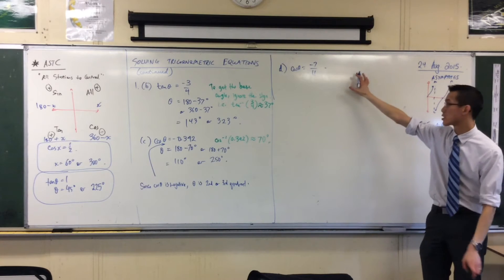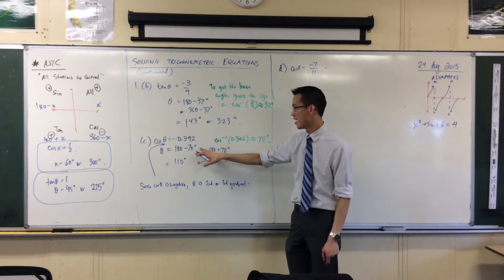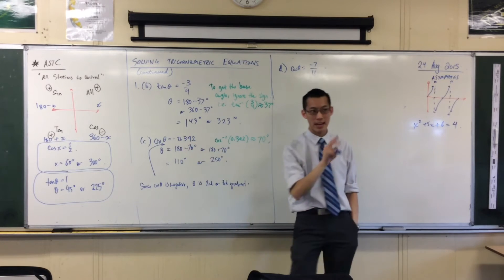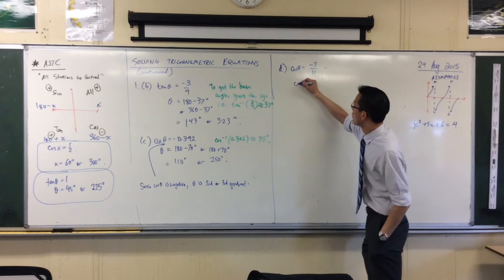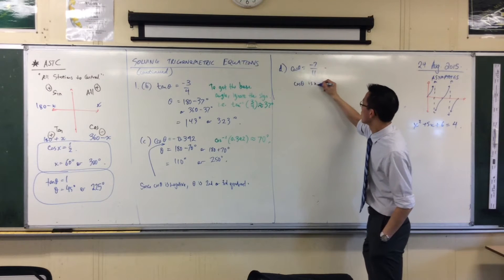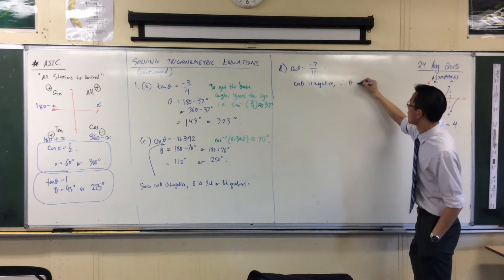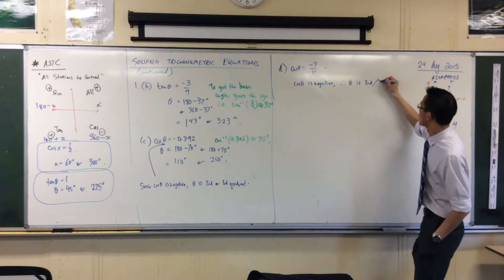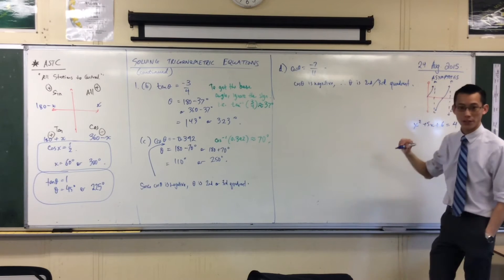We have a distinct advantage doing this question because it very much resembles this one we did here. You see that? Namely that cos is negative, so again I'm in the second or third quadrants. I might say that cos is negative,